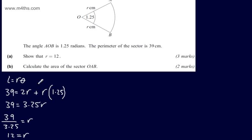In part B, for 2 marks, we need to calculate the area of the sector OAB. The area, in general, is given as one-half R squared theta, where R is the radius and theta is the angle measured in radians.